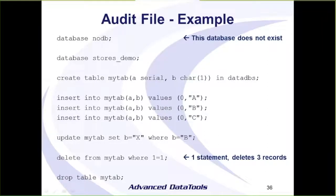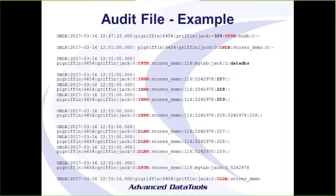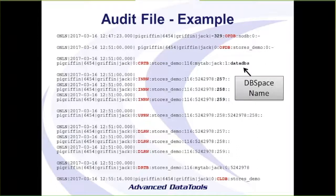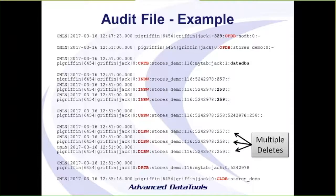Working through an extended example: we've got SQL that tries to access a database that doesn't exist, then creates a table, inserts some rows, updates, deletes, and finally drops. The delete will delete three rows — one statement, three records. In the audit file, the first event shows an error code of 329 (database doesn't exist). The CRTB event shows the DB space. For insert rows, we see the row IDs. For deletes, even though it was one SQL statement deleting three rows, we have three separate entries in the audit file.